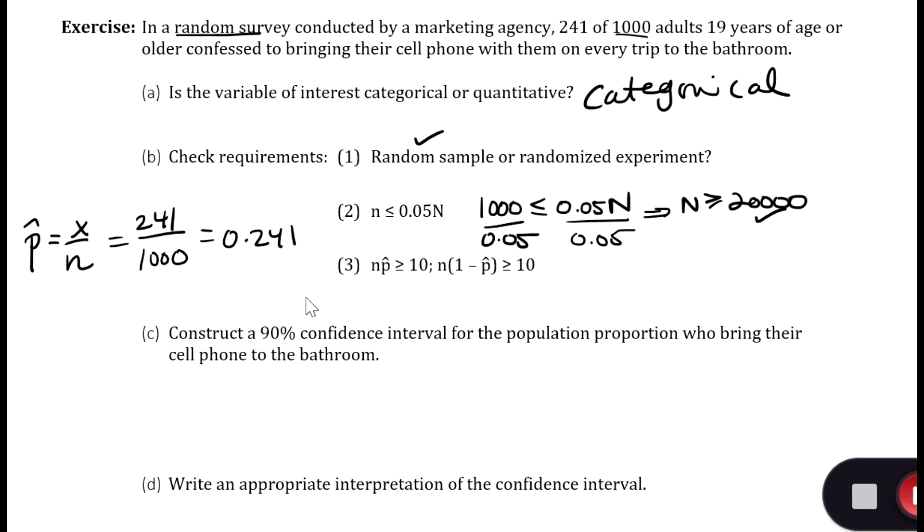This criteria is 1000 times 0.241, and that has to be greater than or equal to 10. This equals 241, and that is greater than or equal to 10. So that criteria is being met.